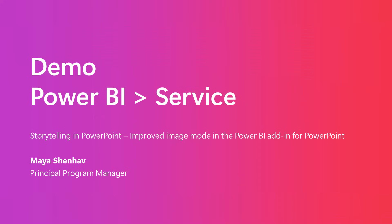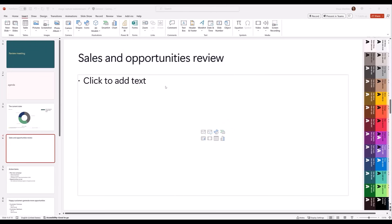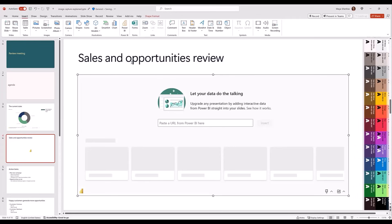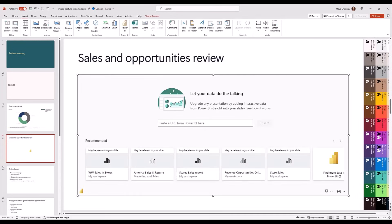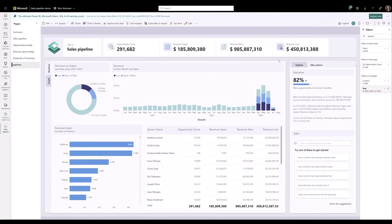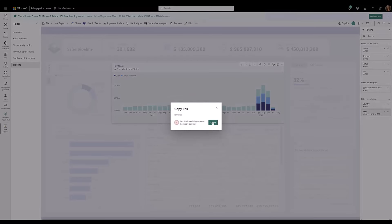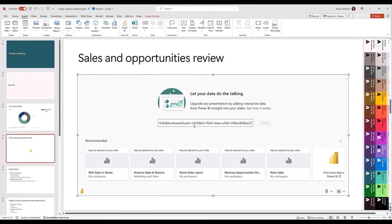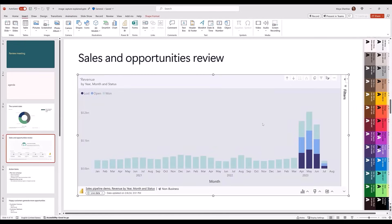Hey everyone. Today I'm going to show you the new and improved image mode feature in the Power BI add-in for PowerPoint. This feature introduces an easier experience and improved functionality for freezing Power BI content as images. Here is my PowerPoint presentation, and this is the slide where I want to insert Power BI data. First, select the Power BI add-in, then go to Power BI and get a link to the visual you want to add to the slide. As always, once added, the visual is live and interactive.